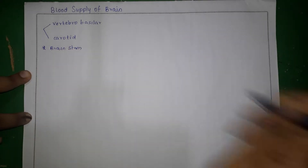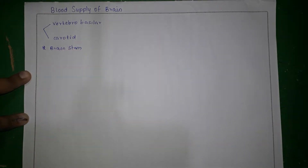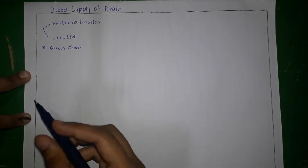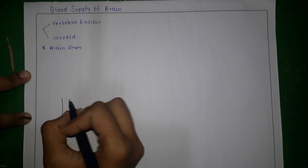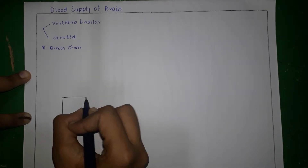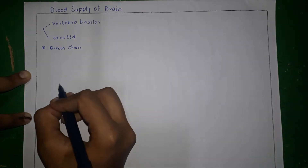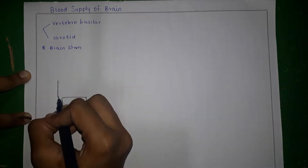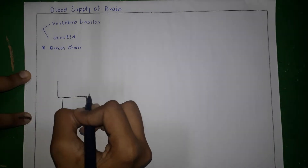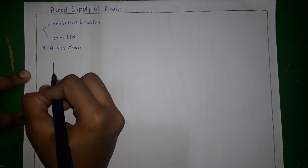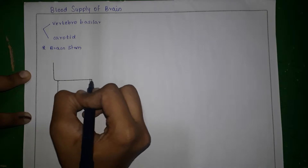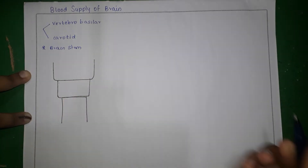First we'll start with the blood supply of the brain stem. We're going to draw a schematic diagram of the brain stem. This is the medulla oblongata, the pons, and the midbrain.